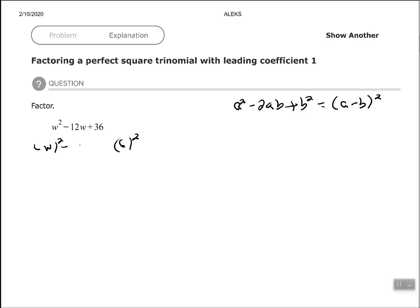So I'm looking at the 6 and the w and multiplying times 2 times 6 times w, multiplying it times 2 to make sure it equals the middle 12w, which it does. So it checks out with our formula.